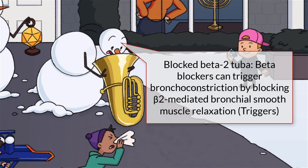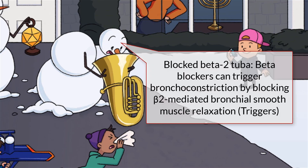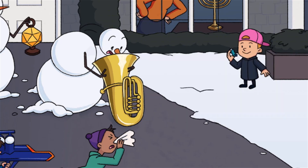Another medication trigger to ask about are beta blockers, which can cause bronchoconstriction by blocking beta-2 mediated bronchial smooth muscle relaxation. This makes sense since we use beta agonists to treat asthma, but we'll save that for our next sketch dedicated to asthma management. For now, let the snowman head blocking the bell of that beta-2 tuba remind you that beta blockers can trigger asthma.